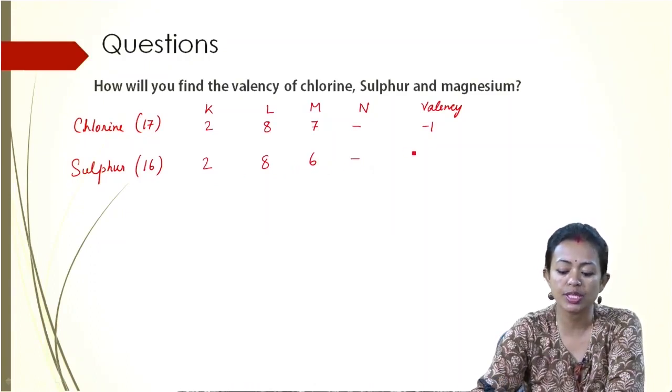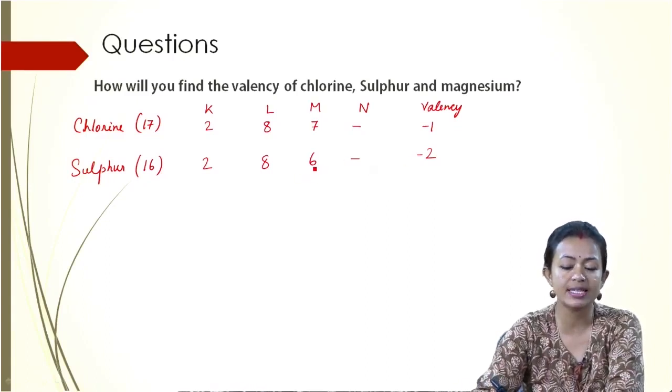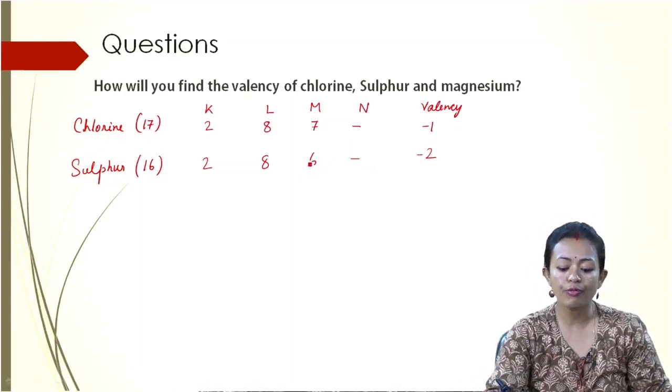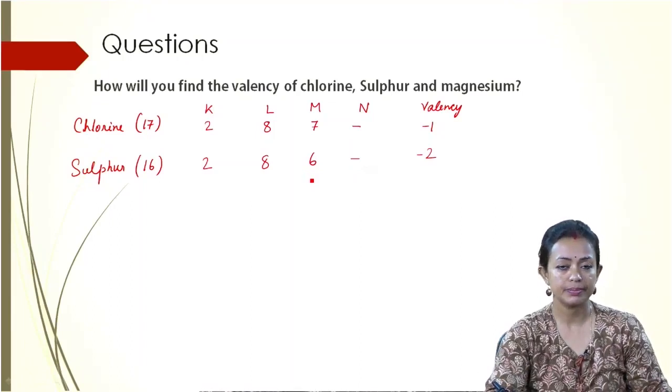So what would it do? It is going to gain 2 electrons to make it 18. So once these 2 electrons get added up in the outermost orbit or the outermost shell of Sulfur, then it is going to be completely stable.